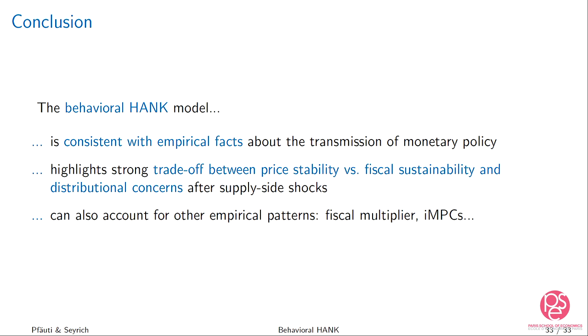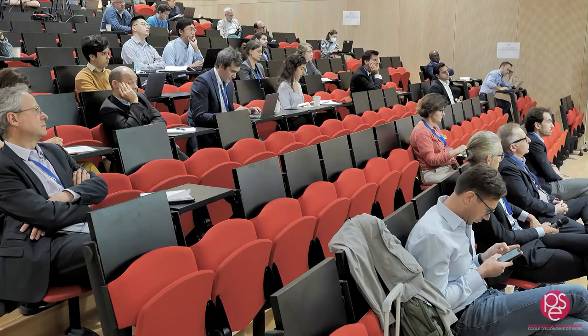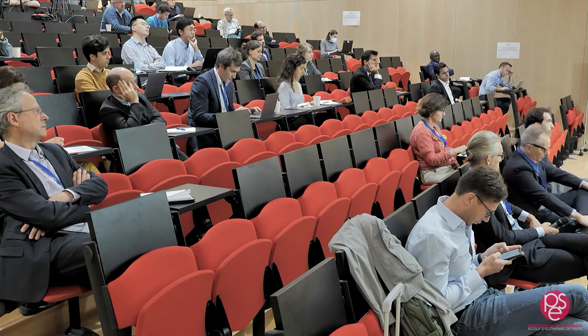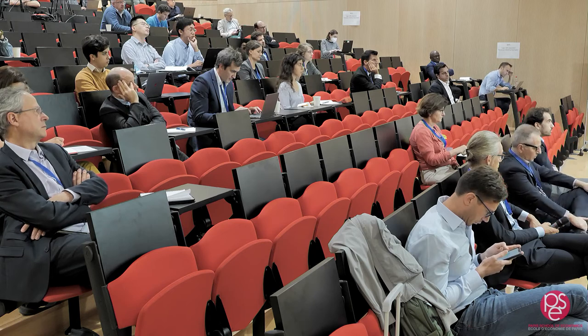Similar findings hold for cost-push shocks. There is also an extension looking at heterogeneity in the behavioral bias — when richer households are more rational and you have a progressive tax system, they fully take that into account and you don't get such a strong increase in inequality. In summary, we propose the behavioral HANK framework that accounts for a large number of empirical facts about monetary policy transmission and highlights a much stronger tradeoff between price stability and fiscal sustainability and inequality. Thank you.